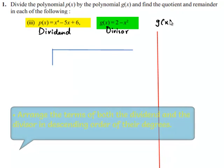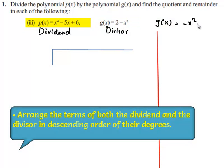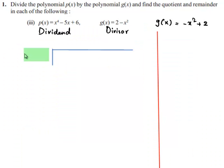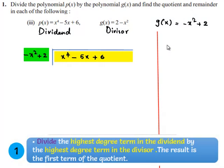G of x can be written as minus x square plus 2, so that the terms are in decreasing order of the degrees. The divisor can be written here as minus x square plus 2, and the dividend can be written here as x power 4 minus 5x plus 6. The highest degree term of the dividend is x power 4 and the highest degree term of the divisor is minus x square.